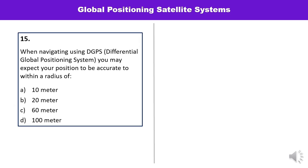Question number fifteen: When navigating using DGPS — Differential Global Positioning System — you may expect your position to be accurate to within a radius of 10, 20, 60, or 100 meters? In the case of differential GPS, we may expect our correct position within a radius of 10 meters. So A is the correct answer.